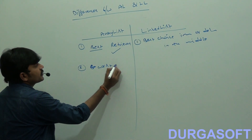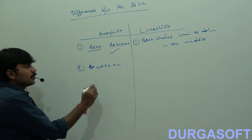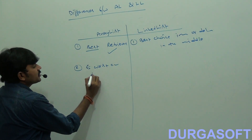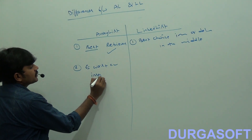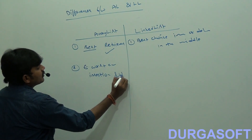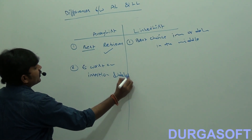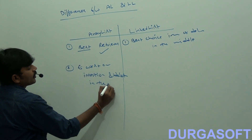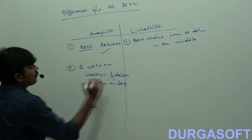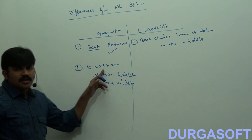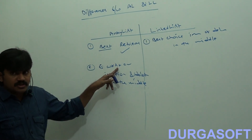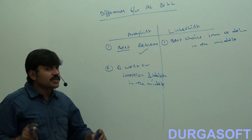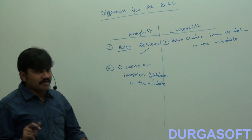ArrayList is the worst choice if our frequent operation is insertion and deletion in the middle. Because several shift operations are required.